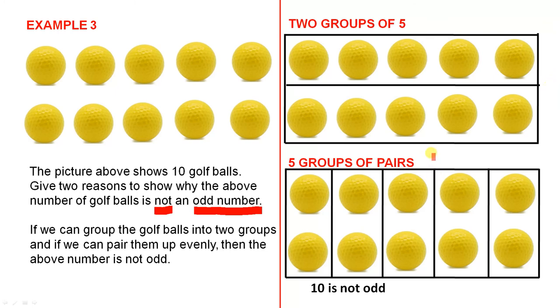What about five groups of pairs? There's one group of pair, another group, another one, another one and another one. So all the golf balls have been grouped into pairs, nothing left over. Hence, ten is not odd.